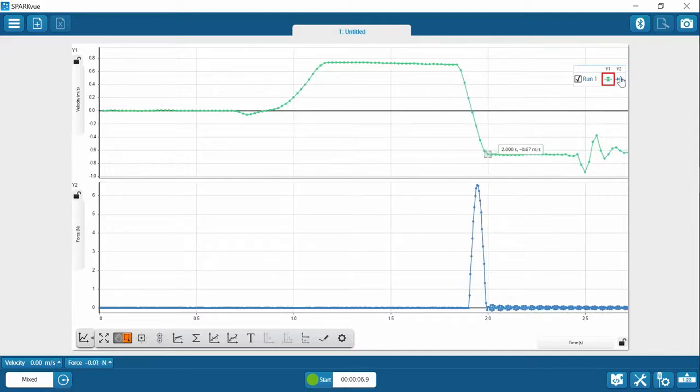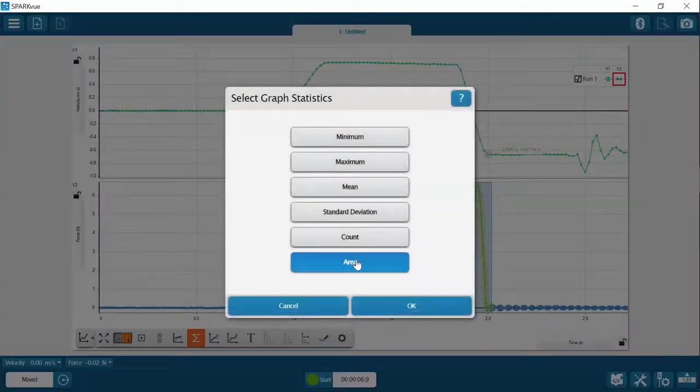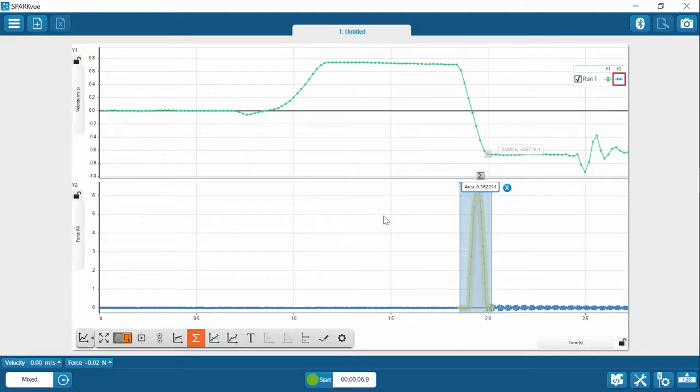And then we can use the selection tool to just select the part of the graph where the collision occurs. You can see it matches where the velocity changes to. And then we select statistics and now area. And so that comes out to 0.36.